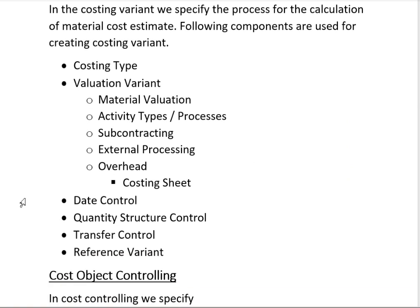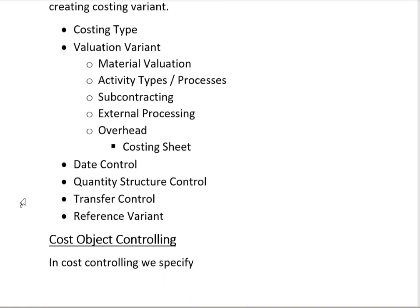The Costing Type specifies whether we are going to calculate actual cost, plan cost, or standard cost. The Valuation Variant specifies how the cost will be calculated — for example, using the average cost of raw materials. Here we specify material valuation, activity type, and process — how the activity type prices will be allocated to the finished goods — as well as subcontracting, external processing, and overhead cost. In the overhead cost section we specify how the indirect overhead cost will be calculated. We create a Costing Sheet, and based on it the system will automatically calculate the indirect overhead cost. In Date Control we specify for which period the cost will be calculated.